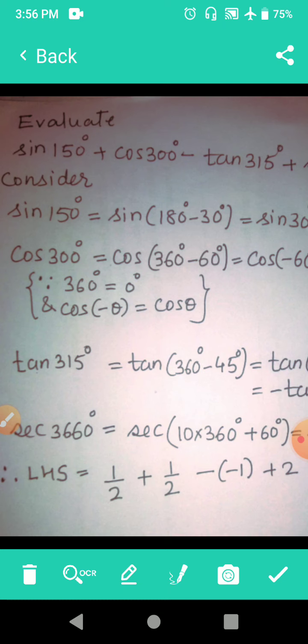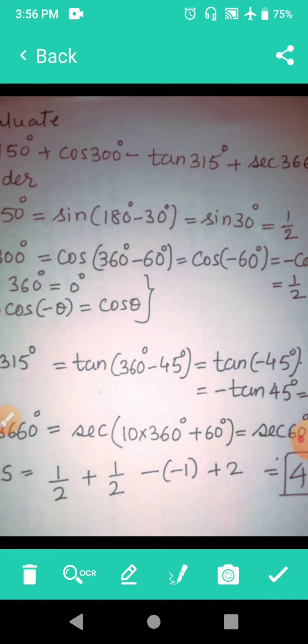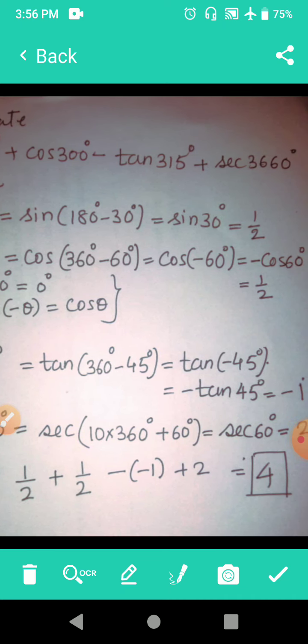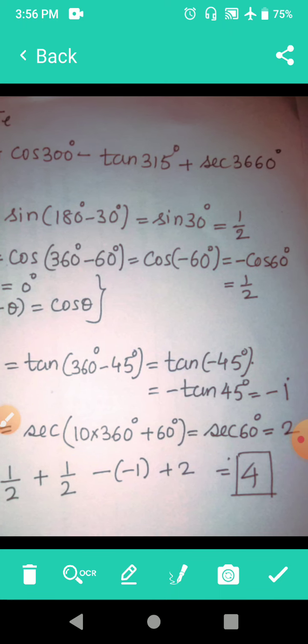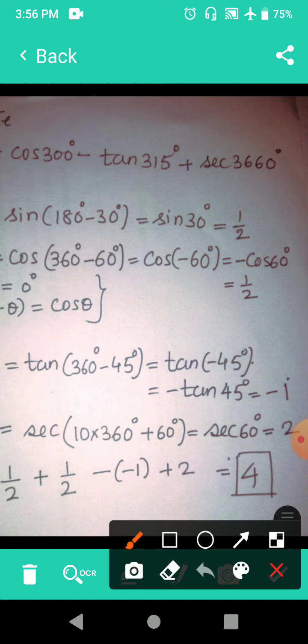I want you to observe here, I am writing degree everywhere. So 150 now is 180 minus 30, 180 minus 30 second quadrant. Second quadrant sin is positive, so you are getting a positive sign here. Positive sign, right? And sin because of 180 sin will remain sin, and sin 30 is equal to 1/2.